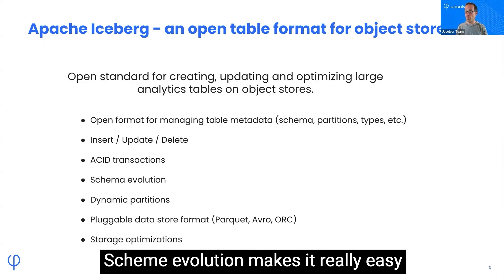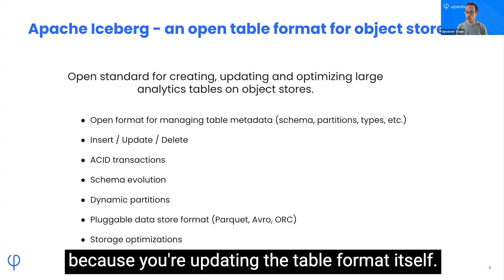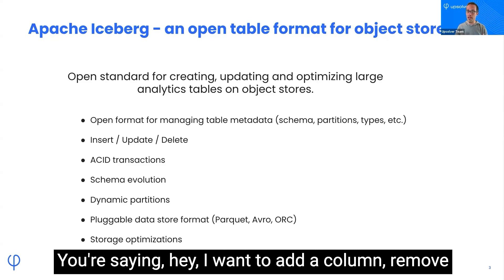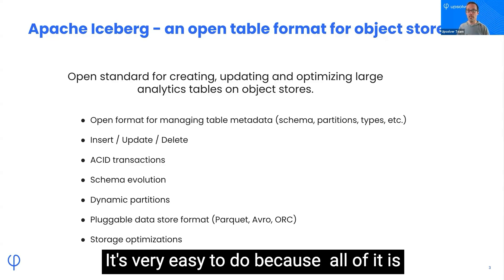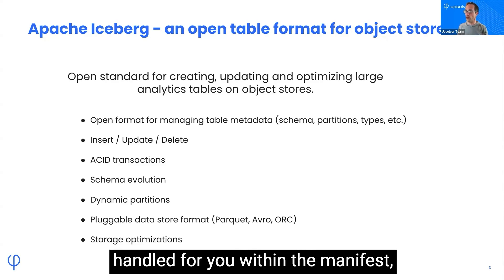Schema evolution makes it really easy because you're updating the table format itself. You can add a column, remove a column, rename a column, or rearrange a column. It's very easy to do because all of it is handled for you within the manifest, which we'll talk about in a minute.